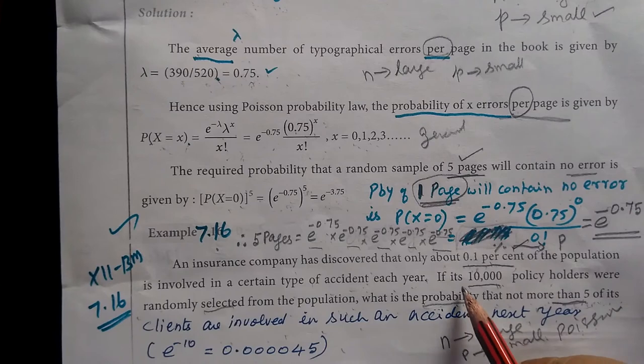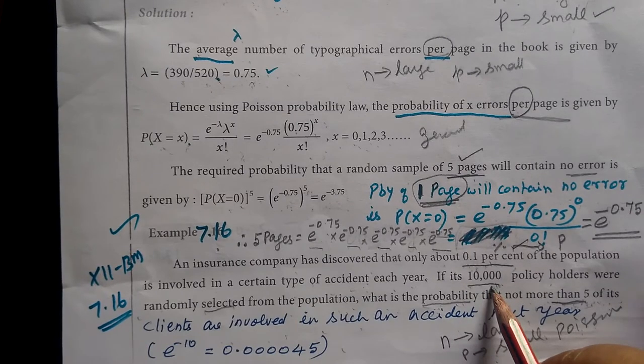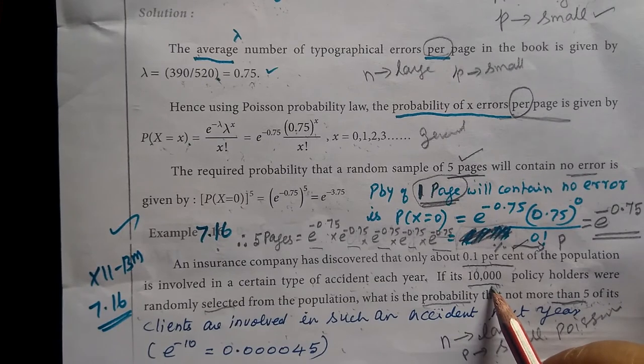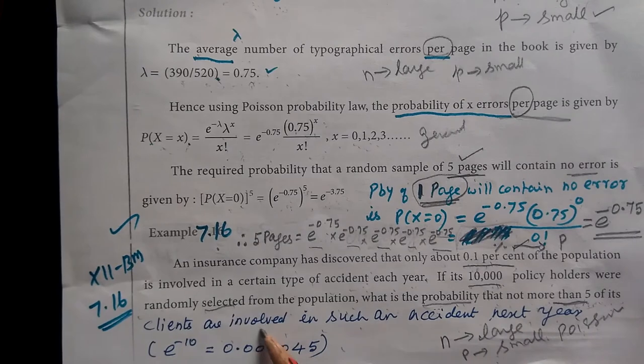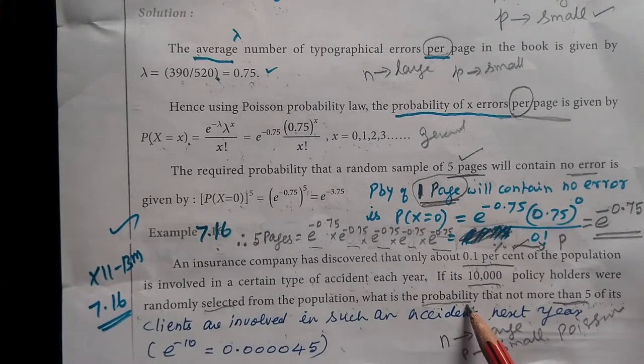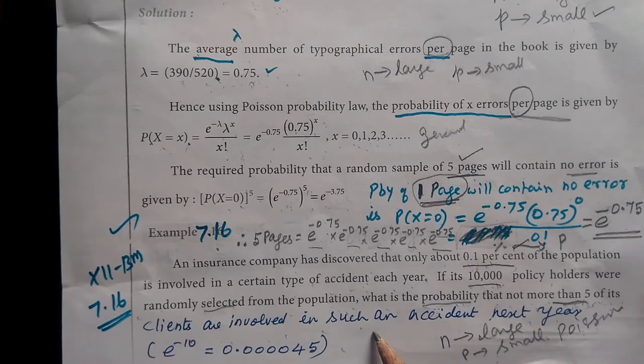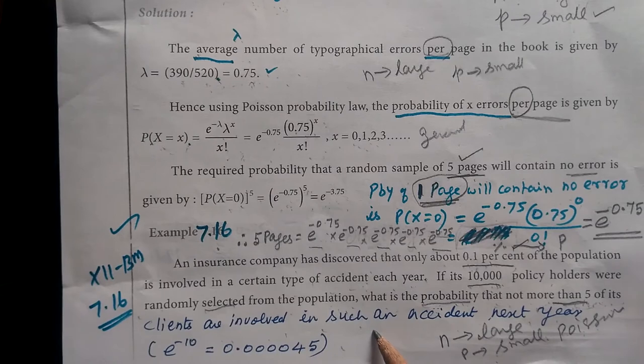If there are 10,000 policyholders randomly selected from the population, what is the probability that not more than 5 of the clients are involved in such an accident next year?